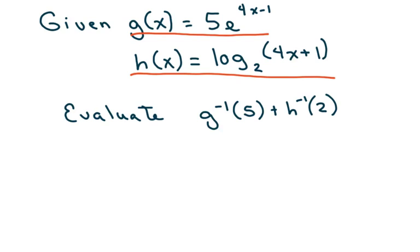So the first one is this one here, let's look at that one. We want to find the inverse, so I'm going to rewrite this as y equals 5e to the 4x minus 1. And then we want to evaluate—this was our g—so we want to evaluate the inverse of g at 5.